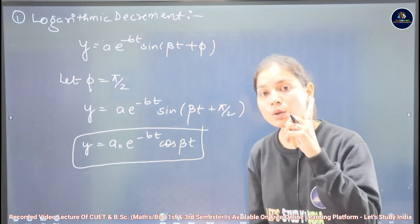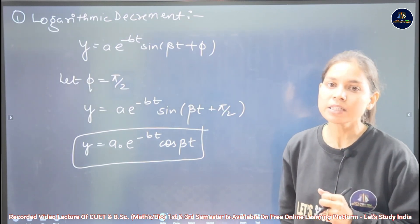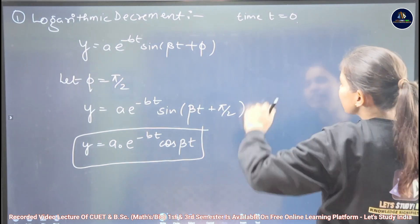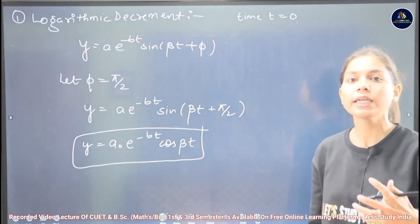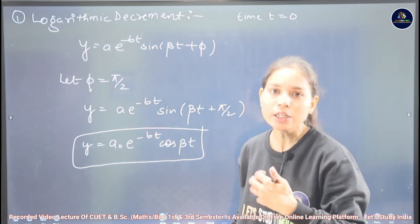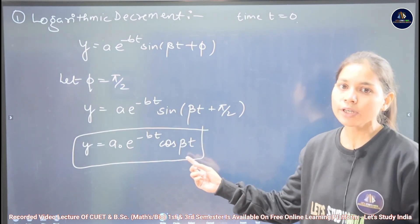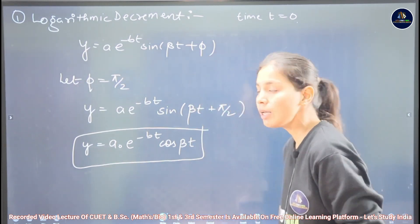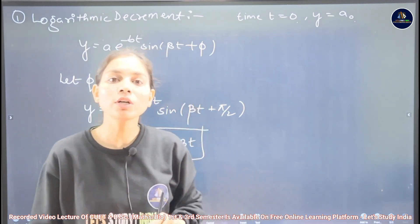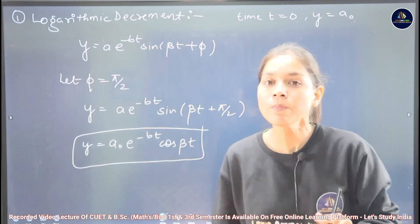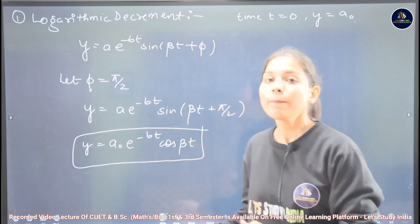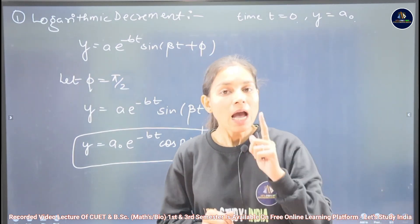If we give time t = 0 to the displacement of the particle, what do we get? At t = 0: e^(-b·0) = e^0 = 1, and cos(β·0) = cos(0) = 1. So the displacement we get is A₀. Therefore, A₀ is the maximum amplitude at t = 0.